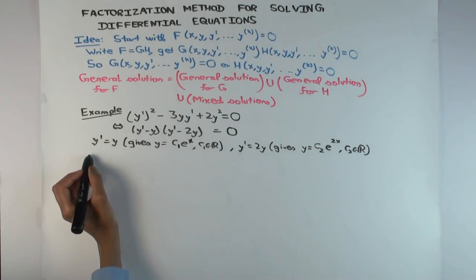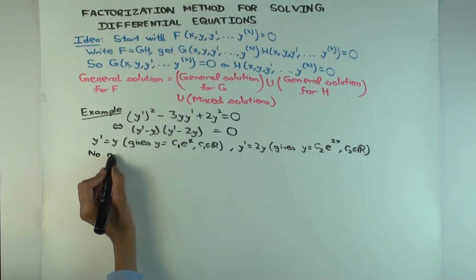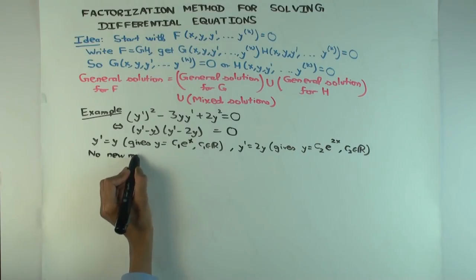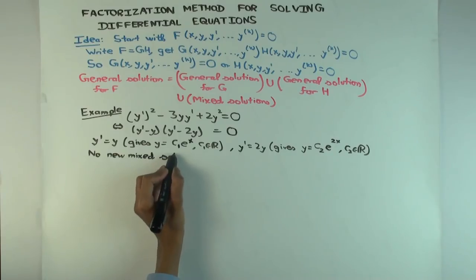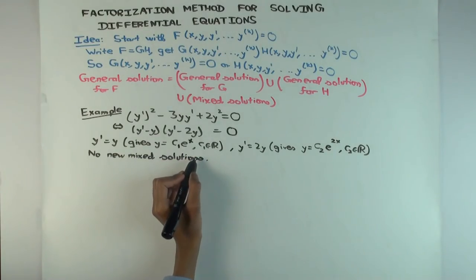So there's no mixed solutions, no new mixed solutions. I mean, the only mixed solution is the one where y equals zero, but that's already included as a pure solution in either of the pieces.